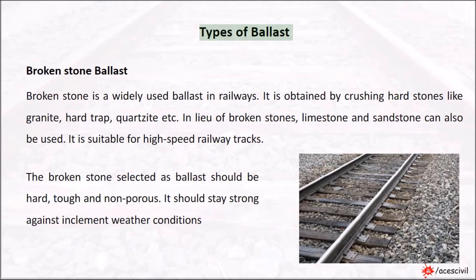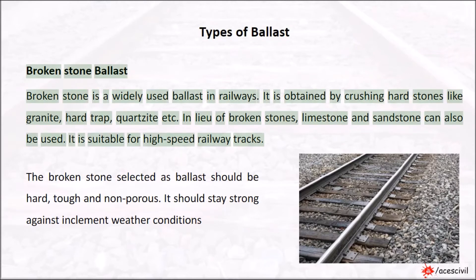Types of ballast — Broken stone ballast: Broken stone is a widely used ballast in railways. It is obtained by crushing hard stones like granite, hard trap, quartzite, etc.